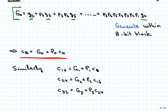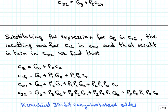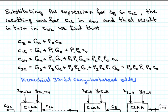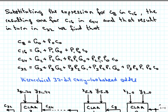Now we can use recursion again and substitute the expression for C8 into C16, and then the resulting expression for C16 into C24, and so forth. We get C8 equals capital G0 plus capital P0 times C0, and C16 equals G1 plus P1 times G0 plus P1 times P0 times C0. These expressions look very much like the original carry lookahead expressions, except now they are expressions for 8-bit blocks.